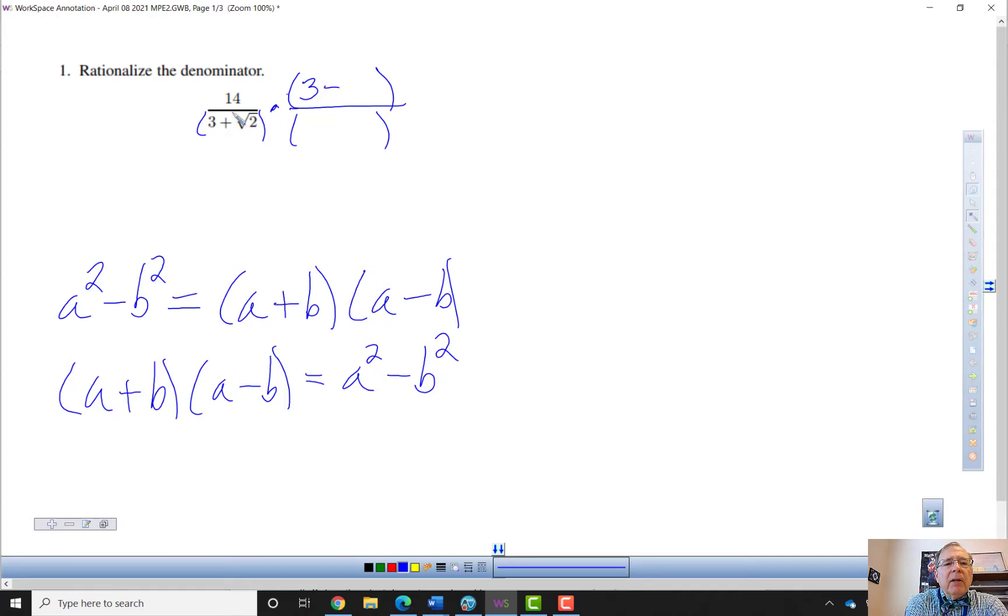So I'm going to put the irrational conjugate of three plus the square root of two, which is three minus the square root of two, divided by itself. So this fraction is just one. I'm not going to distribute that 14 yet.